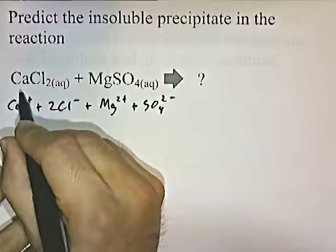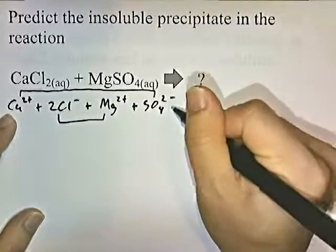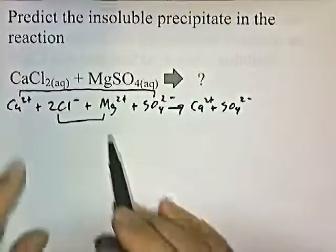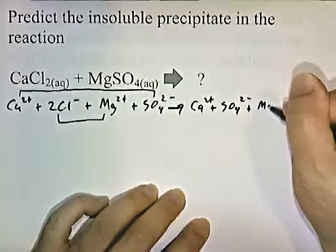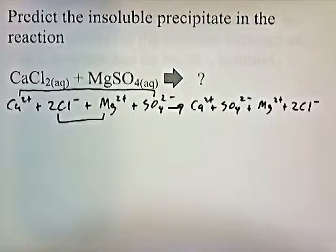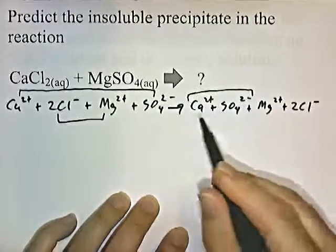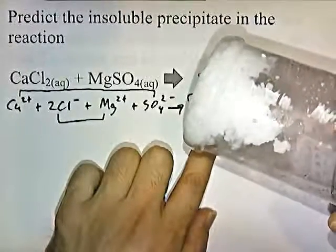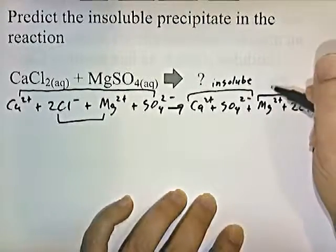Now I pair up the outer ions and the inner ions. I rewrite them: outer pairing gives Ca and SO4; inner pairing gives Mg and Cl, writing the positive ion first — Mg2+ plus 2Cl−. Looking at the solubility rules chart, the compound made out of calcium and sulfate is insoluble — that's the white yuck formed when you mix these two things. The compound made out of magnesium and chloride is soluble.